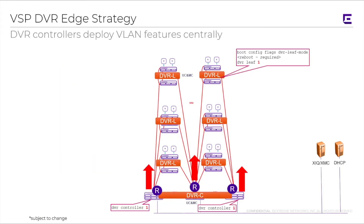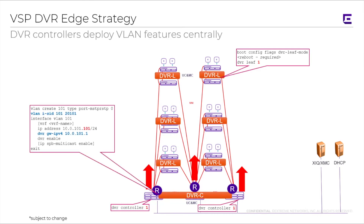Let's look at the CLI sequence — just to show this, realizing that you wouldn't normally be doing this; you'd be doing all of your management through XIQ/XMC. But if you wanted to do a CLI, here's what happens. You basically go out to the edge, tell the switch it's a leaf, and then reboot it. That's pretty much it. For the DVR controller, it's a little different. We have per-service type setups, and for clarity we're showing an example where we show our ICID, our VLAN, VRF name if appropriate, the IP address, the DVR gateway as our default gateway, and SPB multicast if desired. Fairly simple setup. Again, you wouldn't do this through CLI — you'd do this through the graphical user interface of XIQ or XMC.